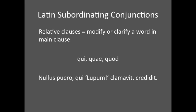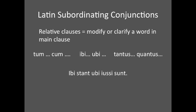There are also relative clauses. They can be introduced by the relative pronoun qui, quae, quod, meaning 'who' or 'which.' Nullus puero qui lupum clamavit credidit — 'No one believed the boy who cried wolf.' They can also be introduced by correlative conjunctions, like tum...cum meaning 'then...when,' or ibi...ubi meaning 'there...where,' or tantus...quantus meaning 'as much as' or 'as big as.'